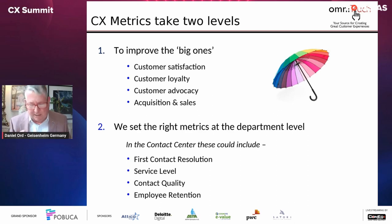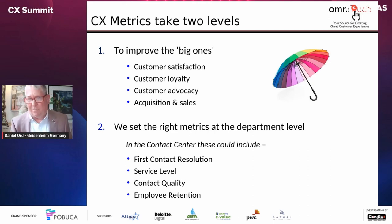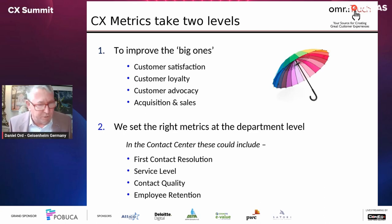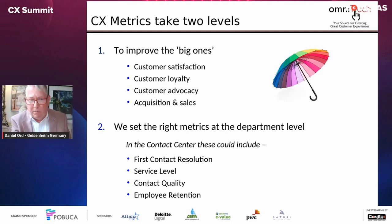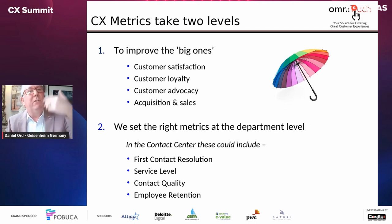I do have to share a caveat here — a word of warning. This assumes that the metrics set at level two are in fact customer centric. First contact resolution is seen to be a customer centric metric because it benefits the organization and the customer. But unfortunately, some contact centers still measure their agents on number of calls handled, which is not a customer centric metric — because it emphasizes cost efficiency for the benefit of the organization over serving the customer well. So it's good to be aware of level one and level two, and also good to do a metrics audit to see if the level two metrics are either helping the department run well or supporting level one.